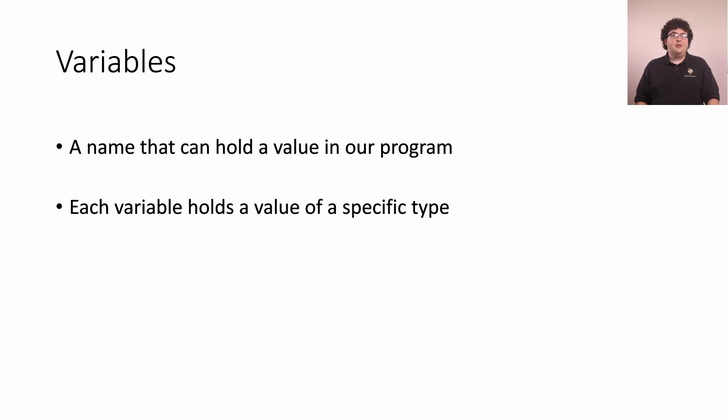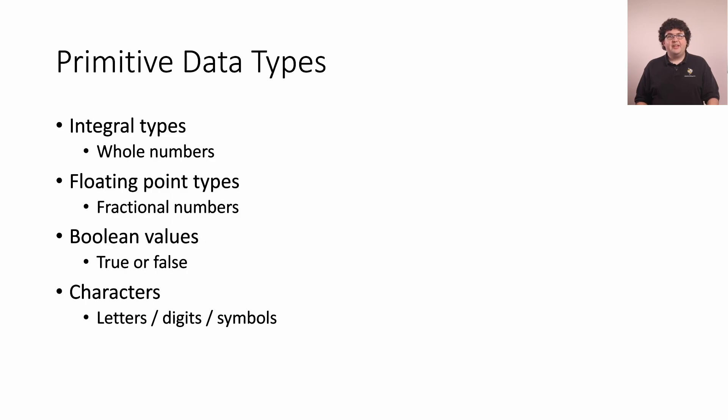The primitive types that come with the language are shown here. Integral types hold integers or whole numbers. Floating point types hold fractional numbers or decimal values. A Boolean variable holds only the values true or false, and a character is a special kind of integral type where the numbers it holds are mapped to individual written characters used for text.